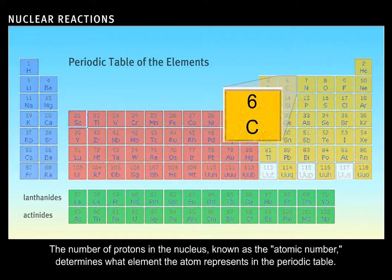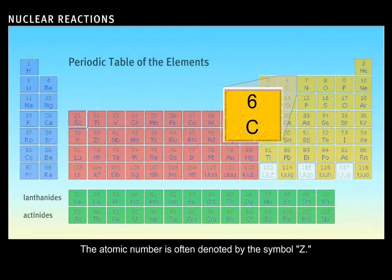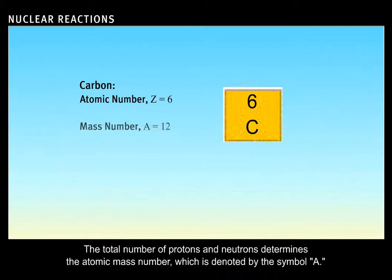The number of protons in the nucleus, known as the atomic number, determines what element the atom represents in the periodic table. The atomic number is often denoted by the symbol Z. The total number of protons and neutrons determines the atomic mass number, which is denoted by the symbol A.